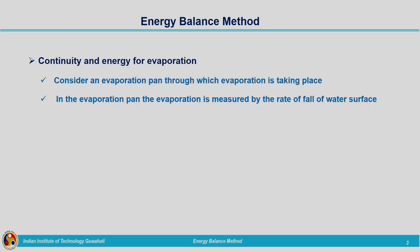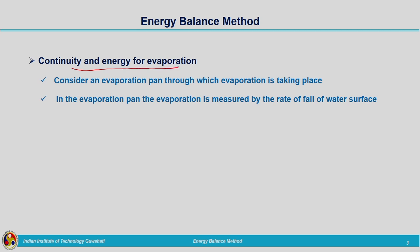The energy balance method is a combination of the energy equation and the mass balance equation — the mass balance equation being the continuity equation. We will be deriving the continuity equation and the energy equation, and combining these two we will come up with the expression for the estimation of evaporation. This is a combination of energy and continuity equations. We are going to consider an evaporation pan through which evaporation is taking place.